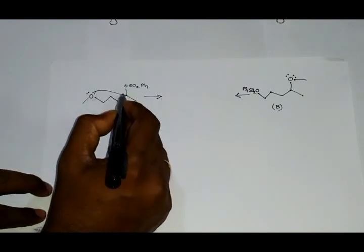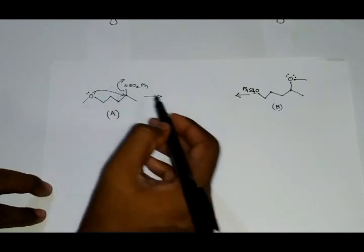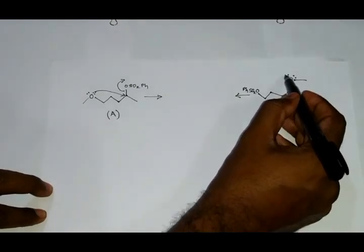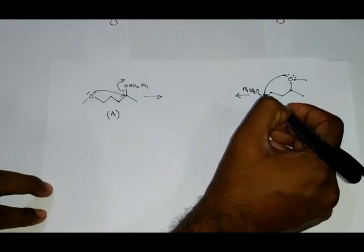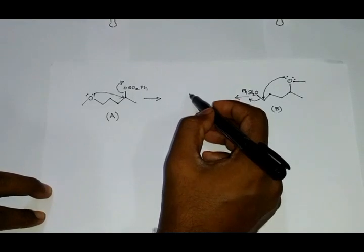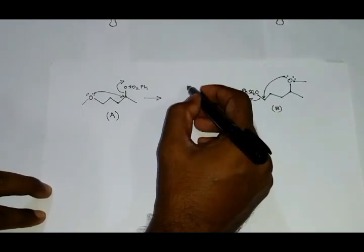In case of reactant B, the lone pair of electrons from this oxygen will come here and this group will leave, leading to the formation of a single intermediate in both the cases.